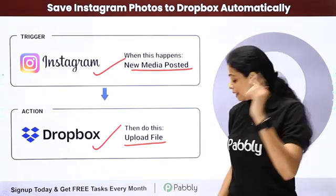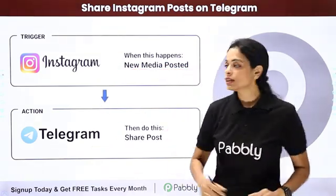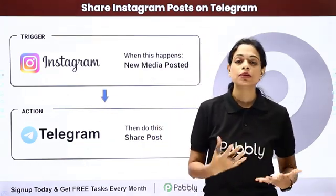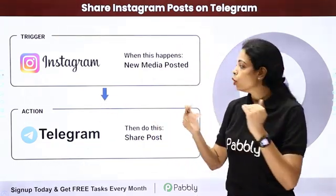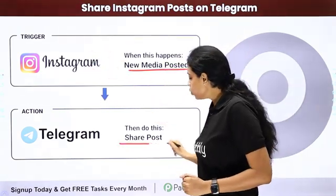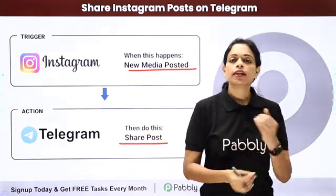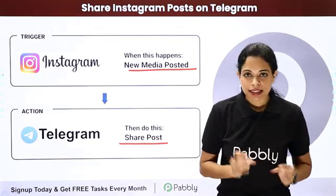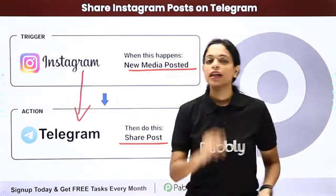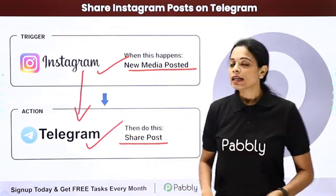Isn't that fantabulous? Next, we have Instagram and Telegram. Telegram is an instant messaging platform. Every time there is a new media post on Instagram, you wish that the post should be shared with your team on Telegram so that they can track it or analyze it. This can again be done using Pabbly Connect software to integrate these two applications. Your trigger application would be Instagram and your action application would be Telegram.